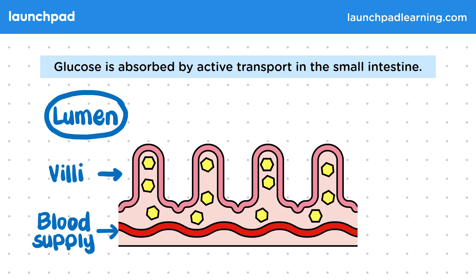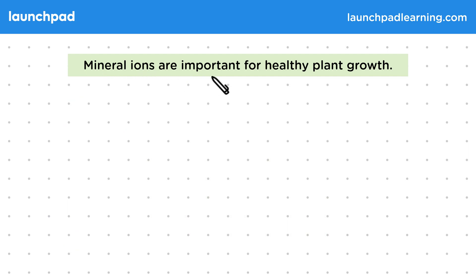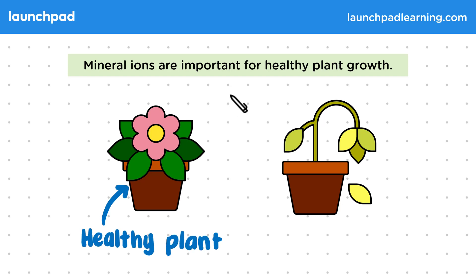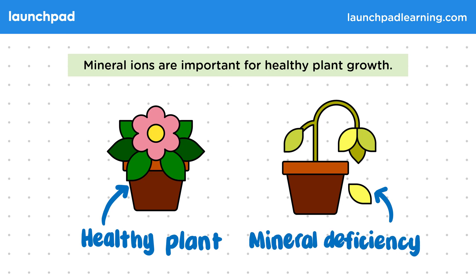For your exam, it's important that you can explain why sugar can be absorbed by active transport in the gut. Mineral ions are also important for healthy plant growth. A healthy plant has a flower and nice green leaves, whereas a plant with a mineral deficiency shows stunted growth.